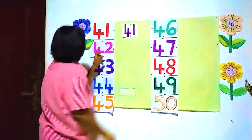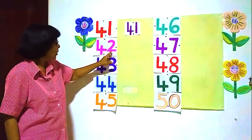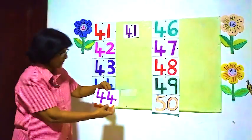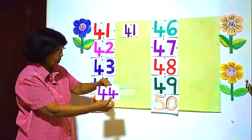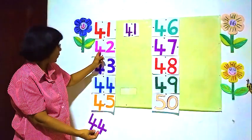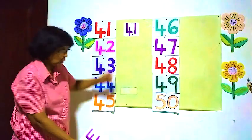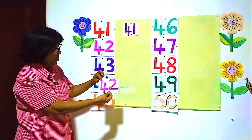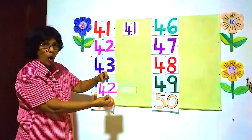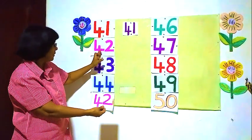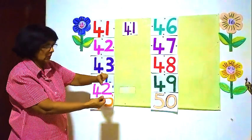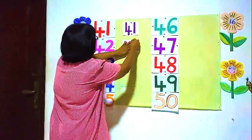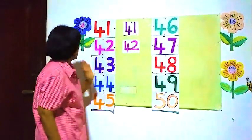Now the next one: 42, 4 and 2. Now you see this one — is this correct? 4 and 4, that's 44. We want 4 and 2, 42. What about this one? This is 42 — 42, this is correct. This is 42.